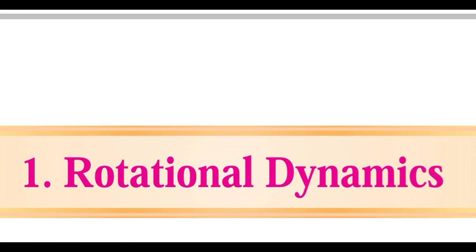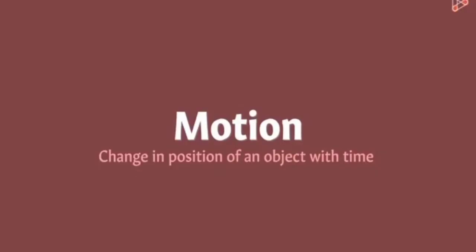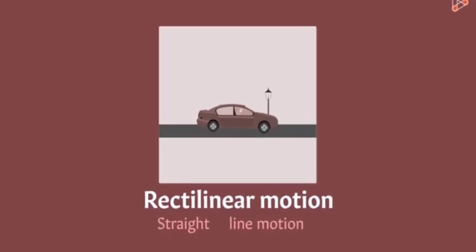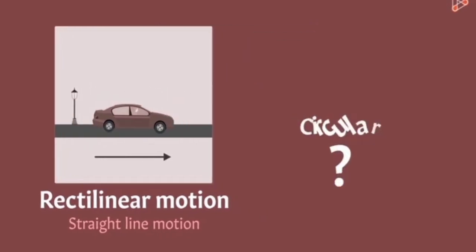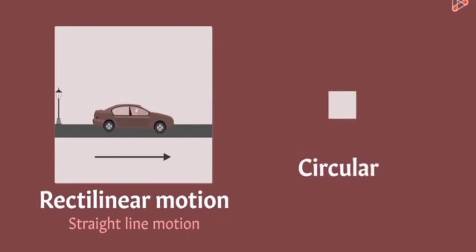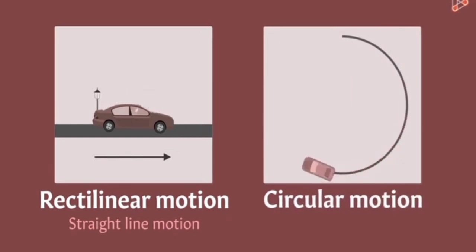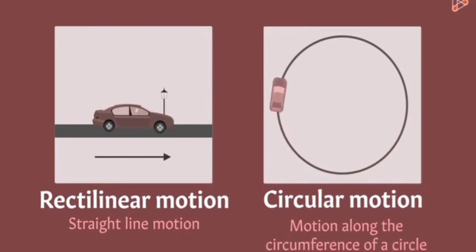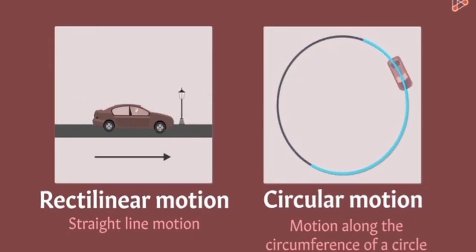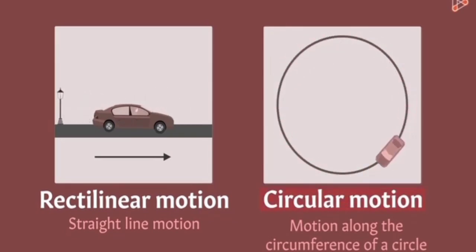We studied what motion is and also saw one type of motion called rectilinear motion — straight line motion — where the path of a moving object is a straight line. But what if the path of a moving object is circular? If an object is moving in circles, it's undergoing circular motion, defined as the motion of an object along the circumference of a circle. The circumference is the curved boundary of the circle.